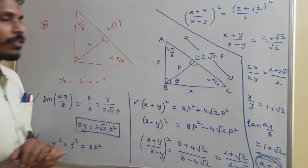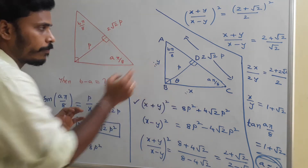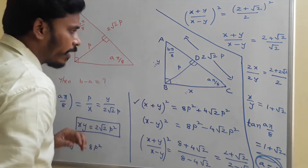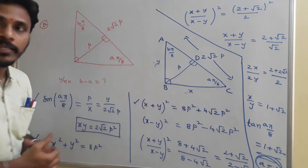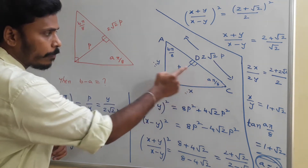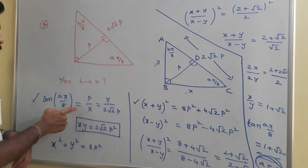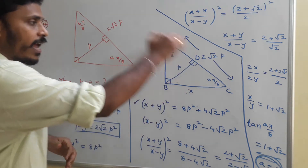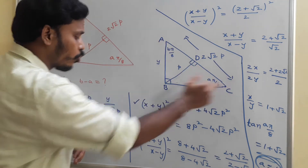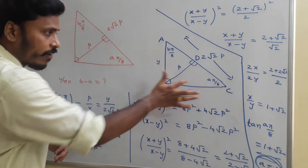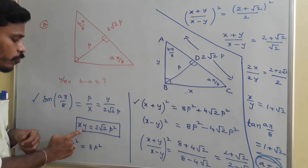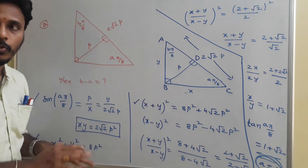I am taking the solution diagram by indicating these two sides as x and y. For this lower triangle, sine of a·π/8 equals opposite side over hypotenuse — opposite side is p, hypotenuse is x, so it's p/x. For the total triangle, sine of a·π/8 equals opposite side y over hypotenuse 2√2·p, giving y/(2√2·p). Multiplying these two sine expressions gives x·y = 2√2·p², that's one result.